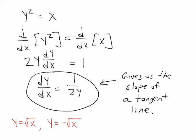We could have taken derivatives of each of these two functions separately in order to find the slopes of tangent lines on the top half or tangent lines on the bottom half. But using implicit differentiation like this allows us to find the slope at any point on the curve, and we only have to do one calculation to get it.